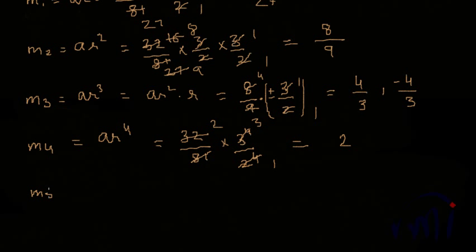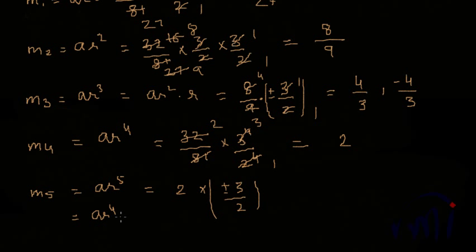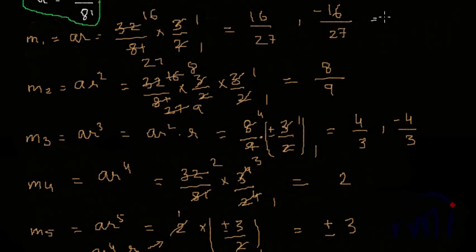M5 = AR⁵ = AR⁴ × r = 2 × (±3/2). The 2s cancel, giving M5 = ±3. So we have found all five geometric means.